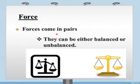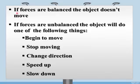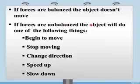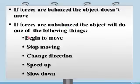Forces come in pairs — it means forces always occur in the form of a pair, so they can be either balanced or unbalanced forces. If forces are balanced, the object does not move. If forces are unbalanced, the object will do one of the following: begin to move, stop moving, change direction, speed up, or slow down.